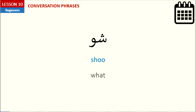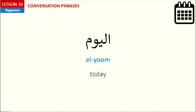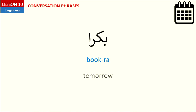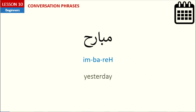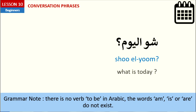Now, our first word is شو — 'What?' شو. Next, كان — 'was.' كان. Then, اليوم — 'today.' اليوم. And بكرة — 'tomorrow.' بكرة.